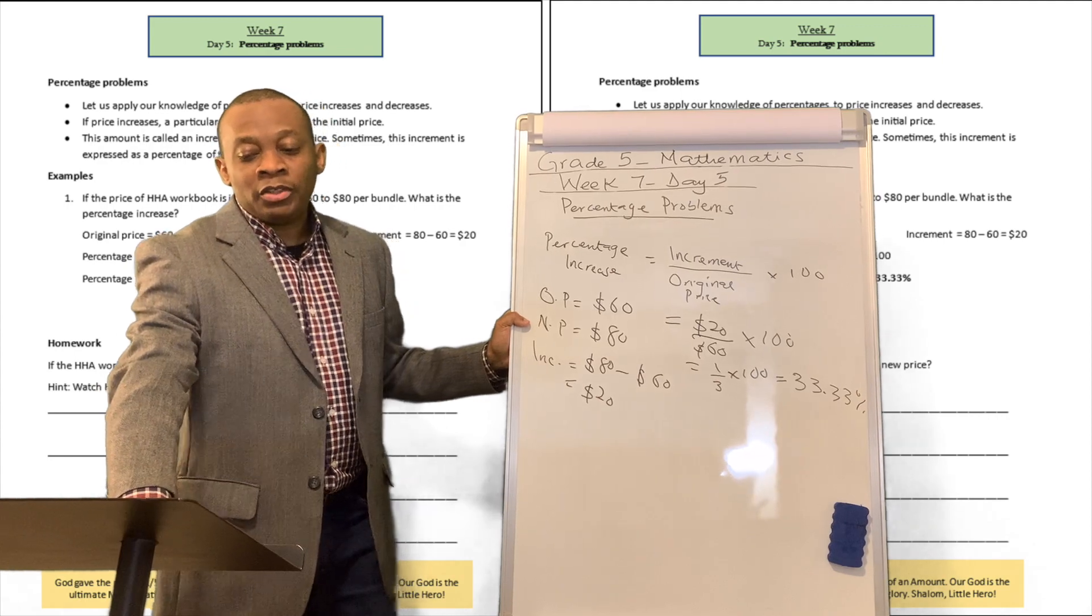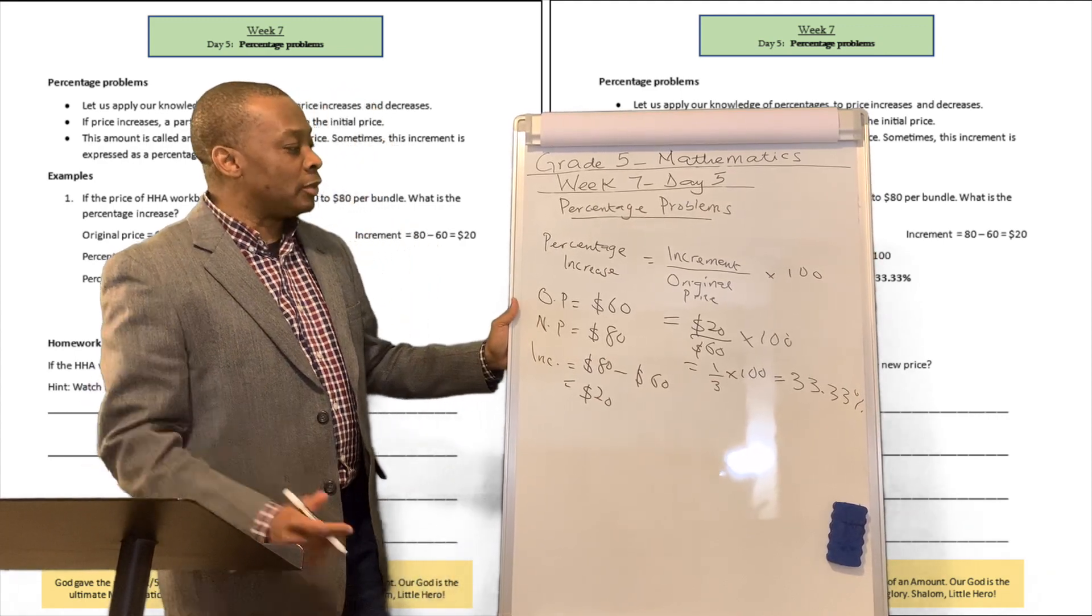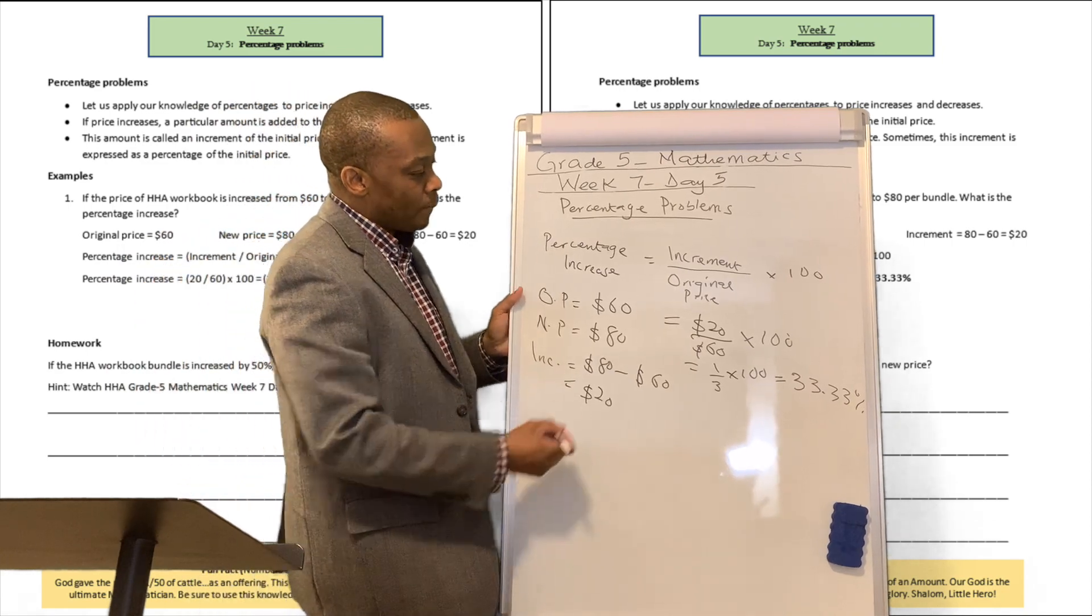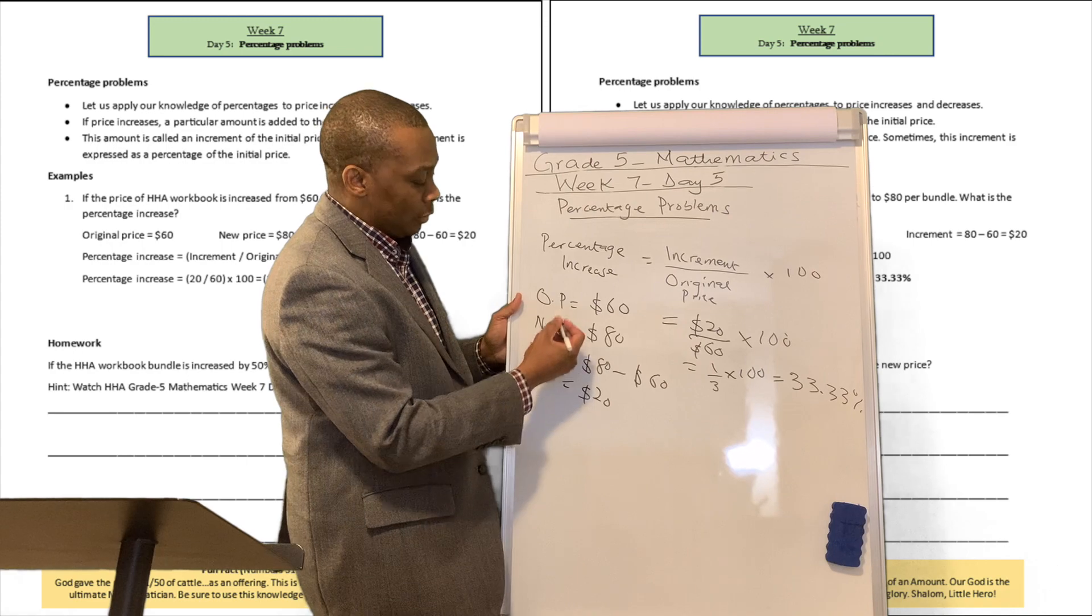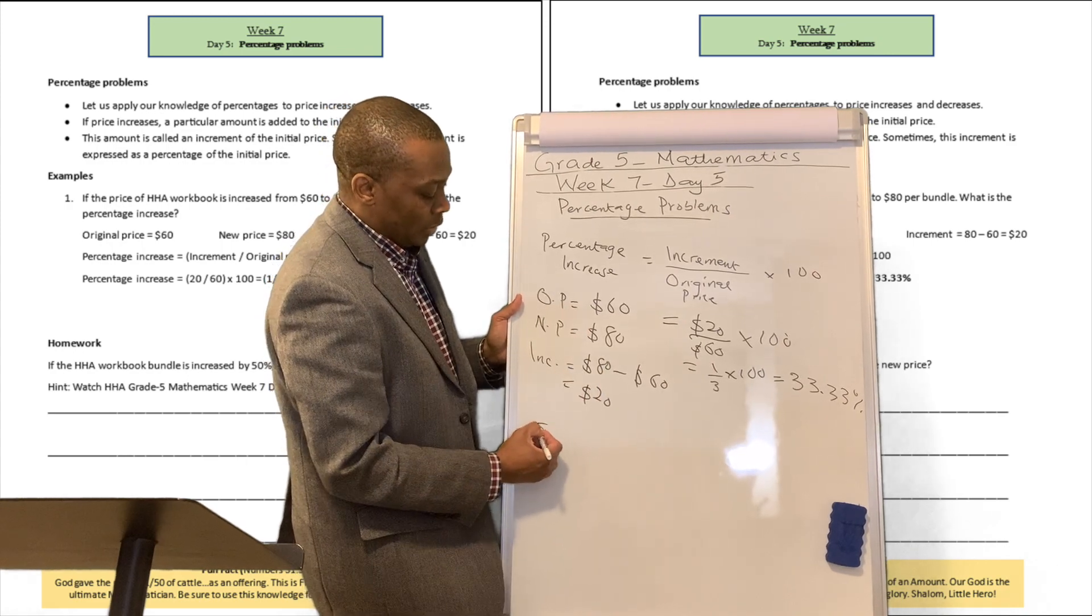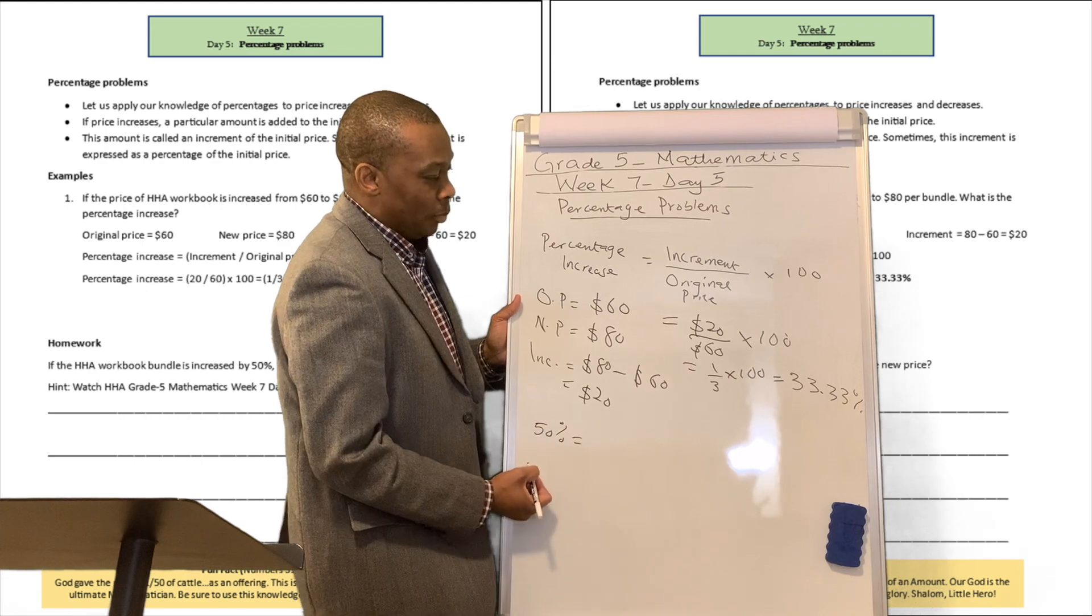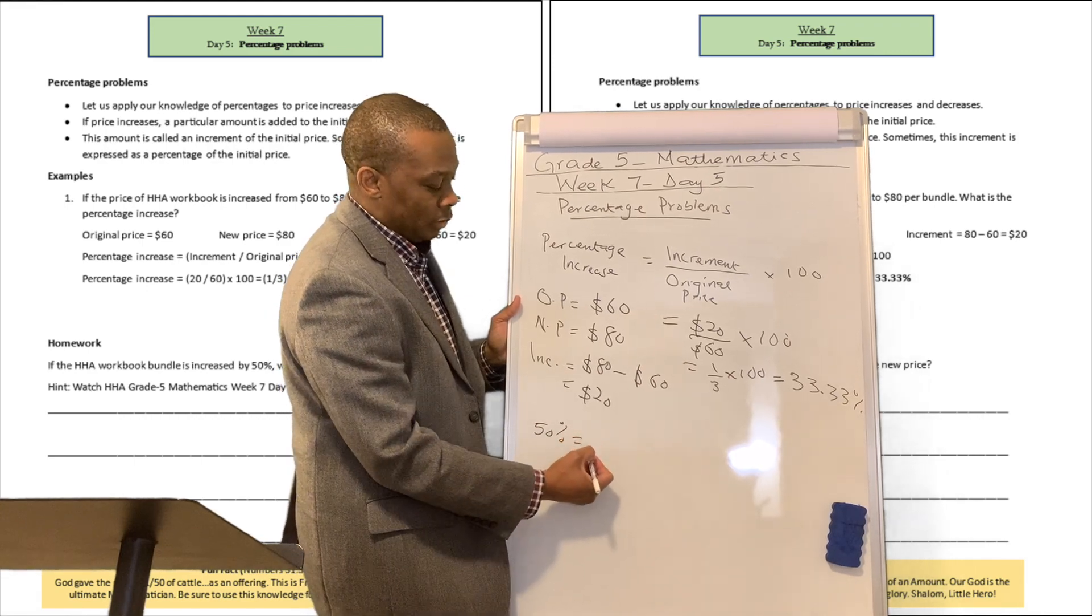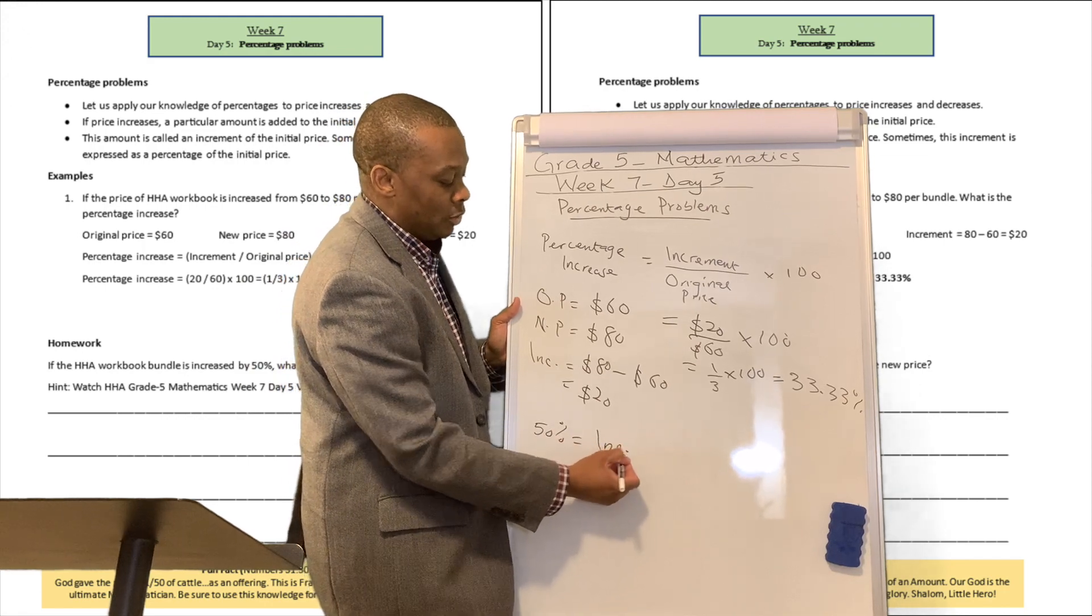Now, they said, if the HHA workbook bundle is increased by 50%, what is the new price? Well, you know what? They said it's increased by 50%, so we're going to say 50%, or 0.5, let's say 50% is equivalent to the increment. Don't know the increment just yet.